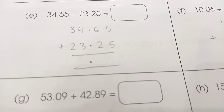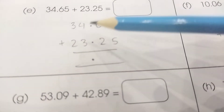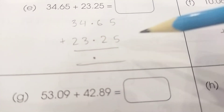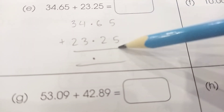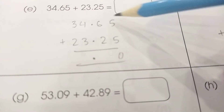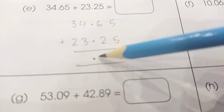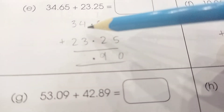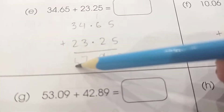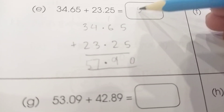Similarly for the next one — five plus five is ten, write zero carry one; six plus one gives seven; seven plus two is nine; four plus three is seven; three plus two is five — so the answer is 57.90.